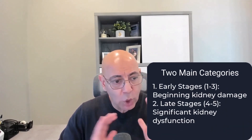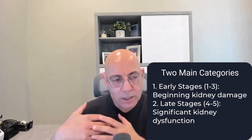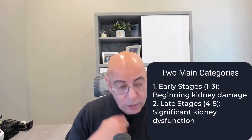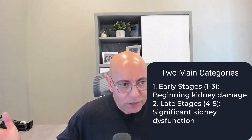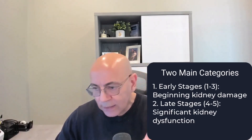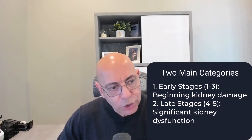The best way to understand the stages of kidney disease is to break them into two categories. One category is what we call the early stages — typically stages one through three. Late stages are stages four and five. Easy to remember: early and late.